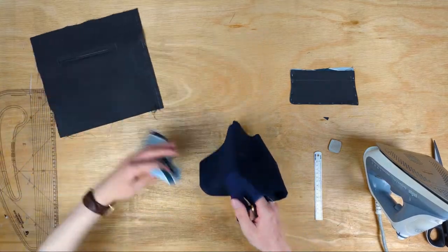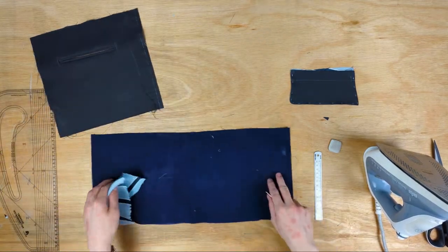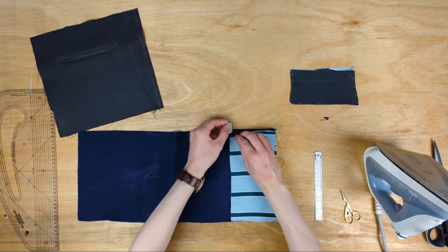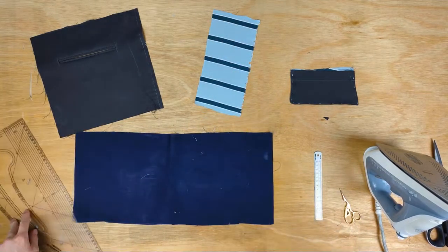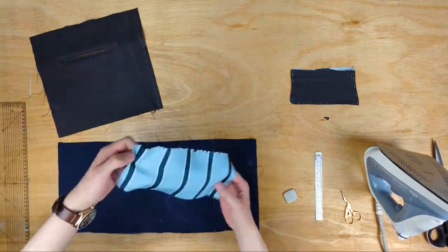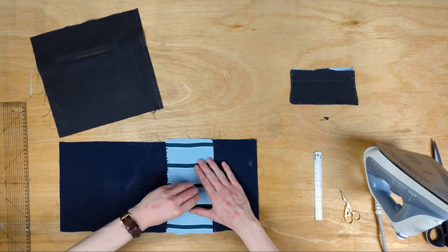To sew the facing to the pocket, find where the bottom edge of the facing is by lining it up to the top of the pocket's slisha. I'm marking about one centimeter above the lower raw edge. I'm taking away the facing and marking that line all the way across.